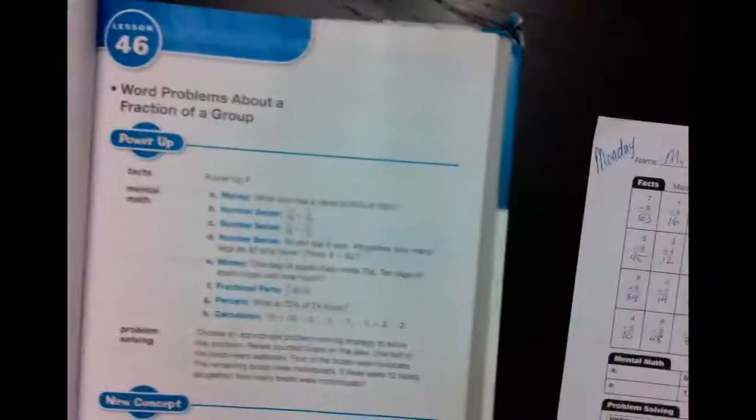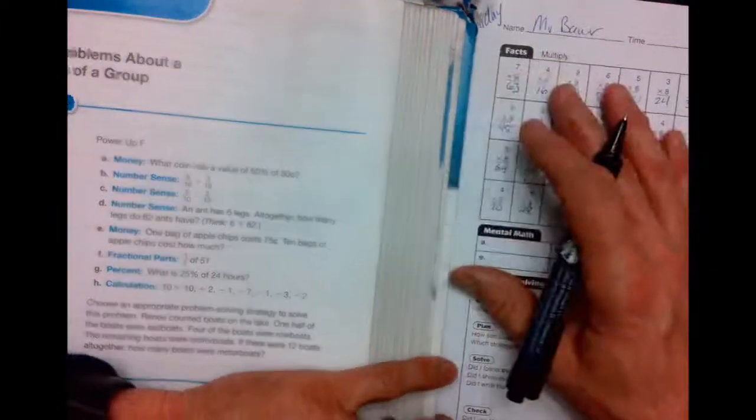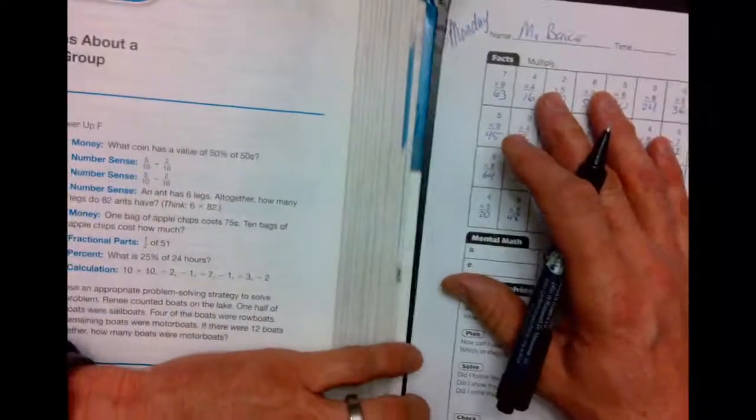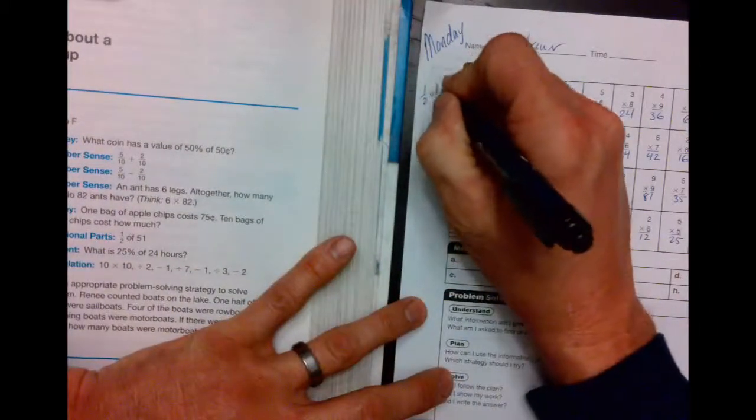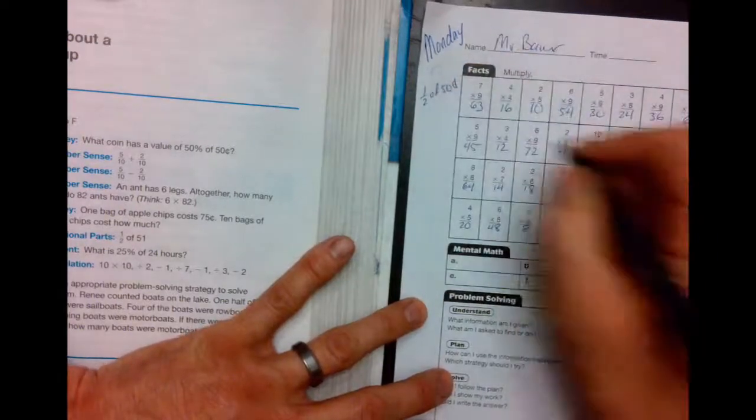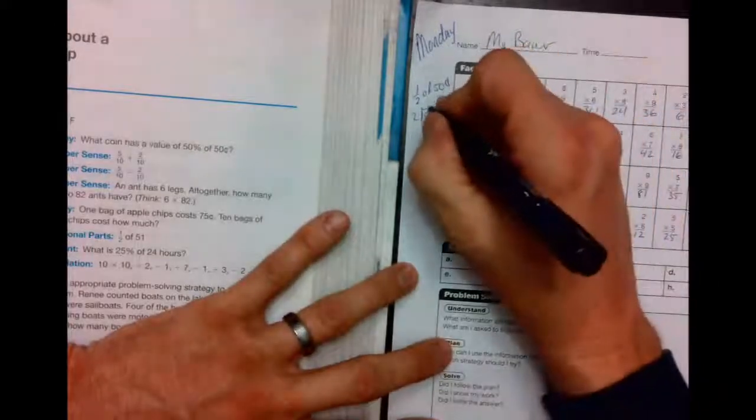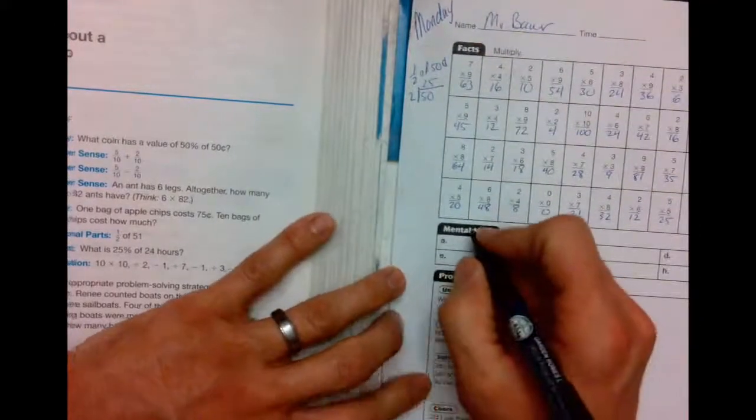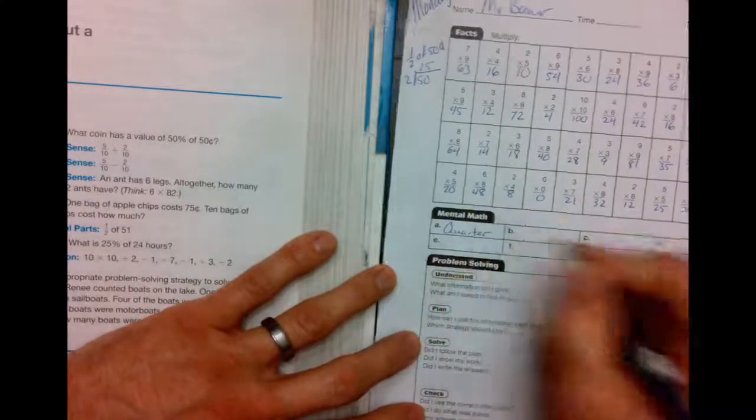Alright. Our mental math section, lesson 46 is on page 289. A says, what coin has a value of 50% of 50 cents? When I say 50%, you say one half of 50 cents. If I take 50 cents, hopefully you know 2 what equals 50 cents? 2 quarters. Our answer is a quarter.